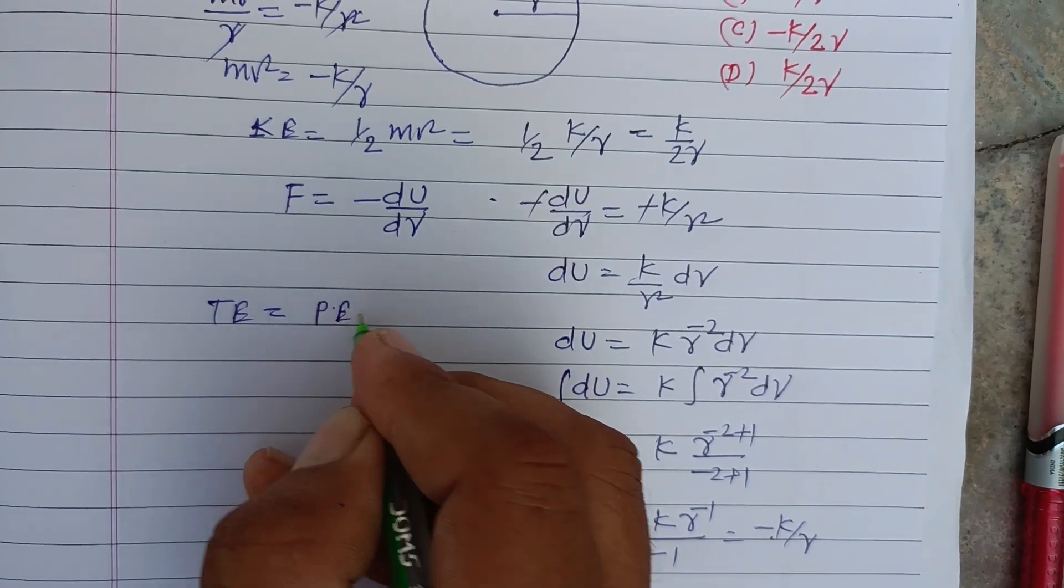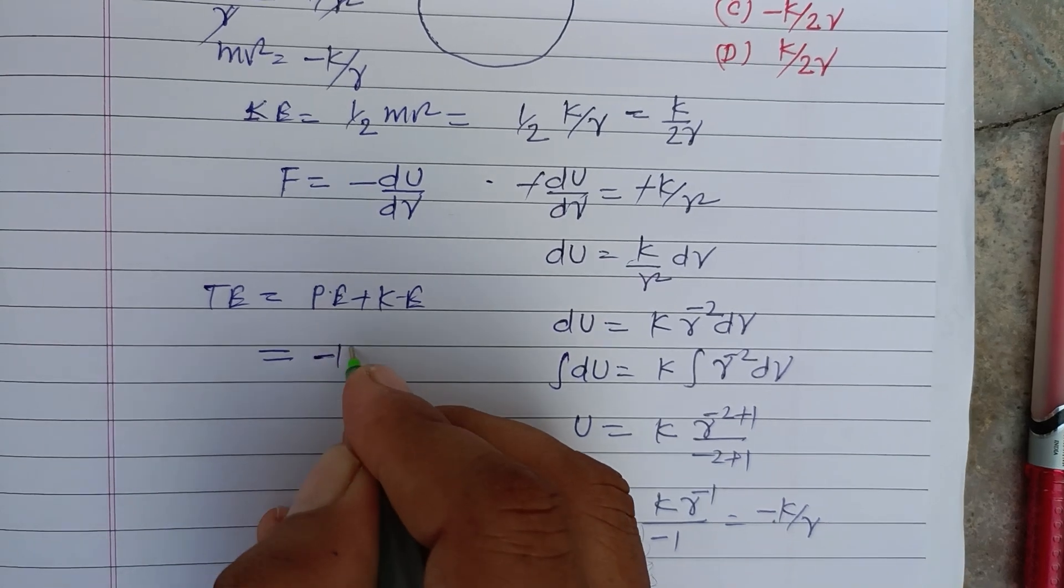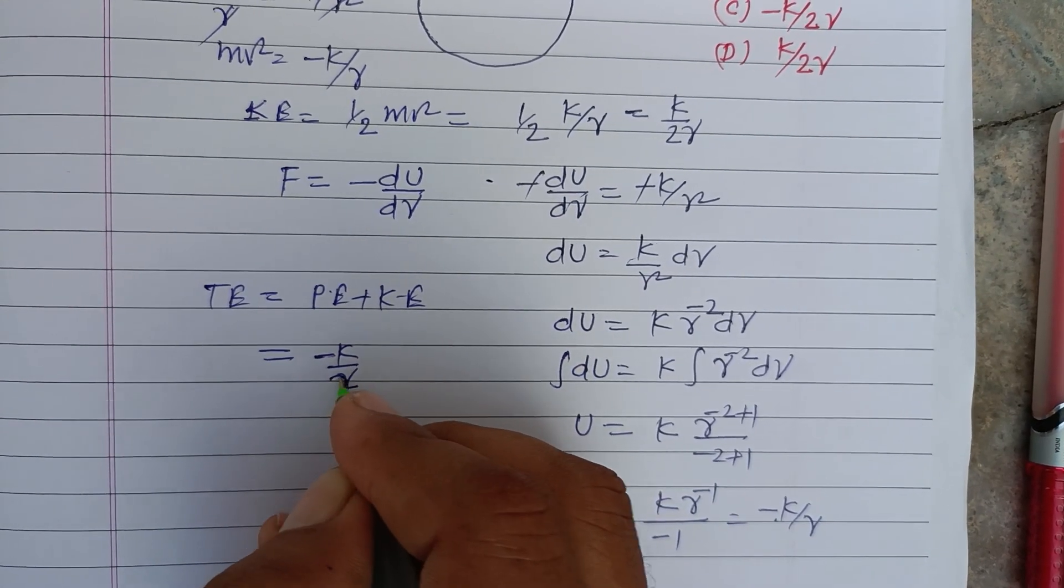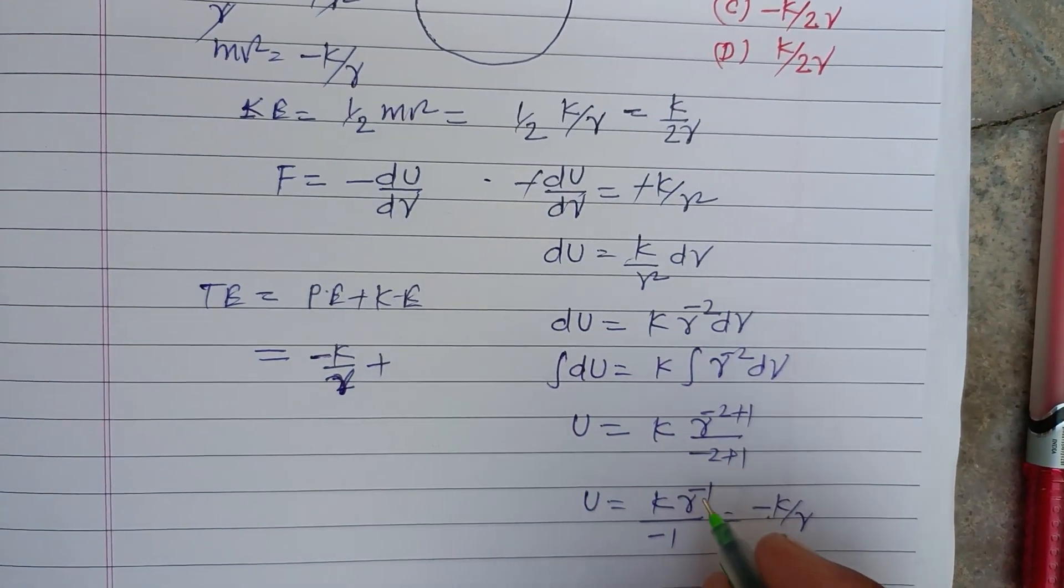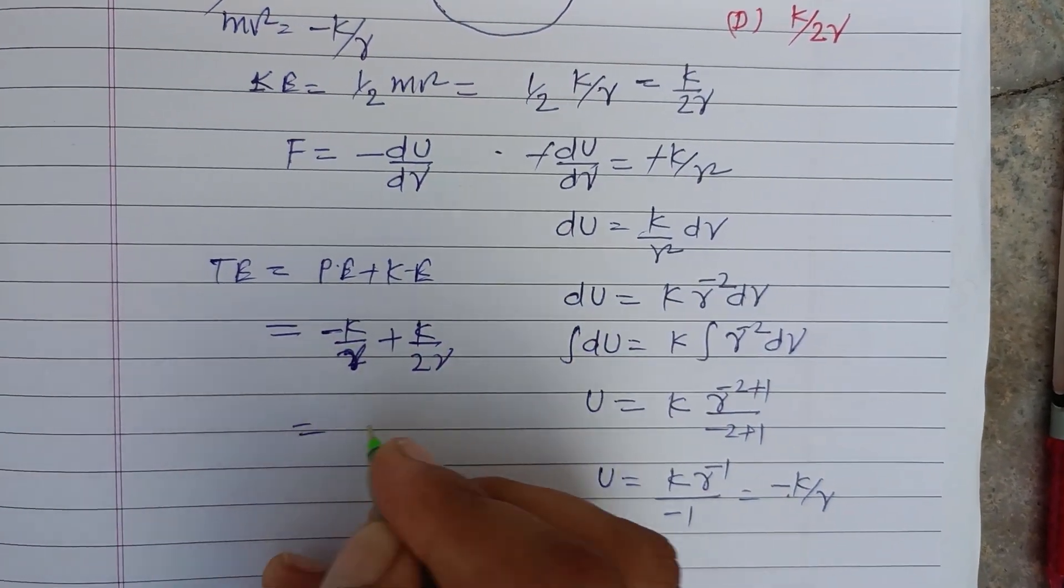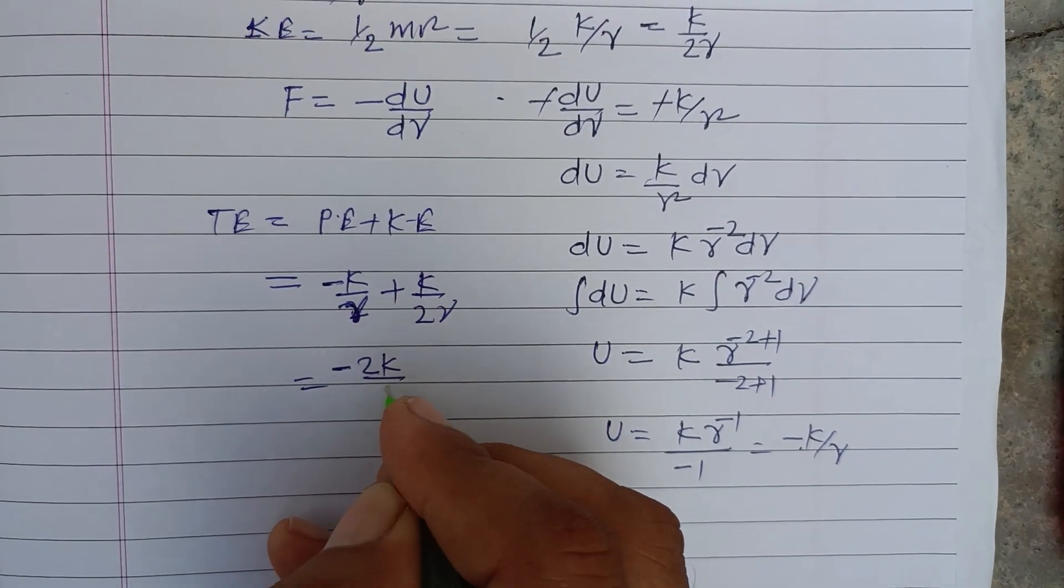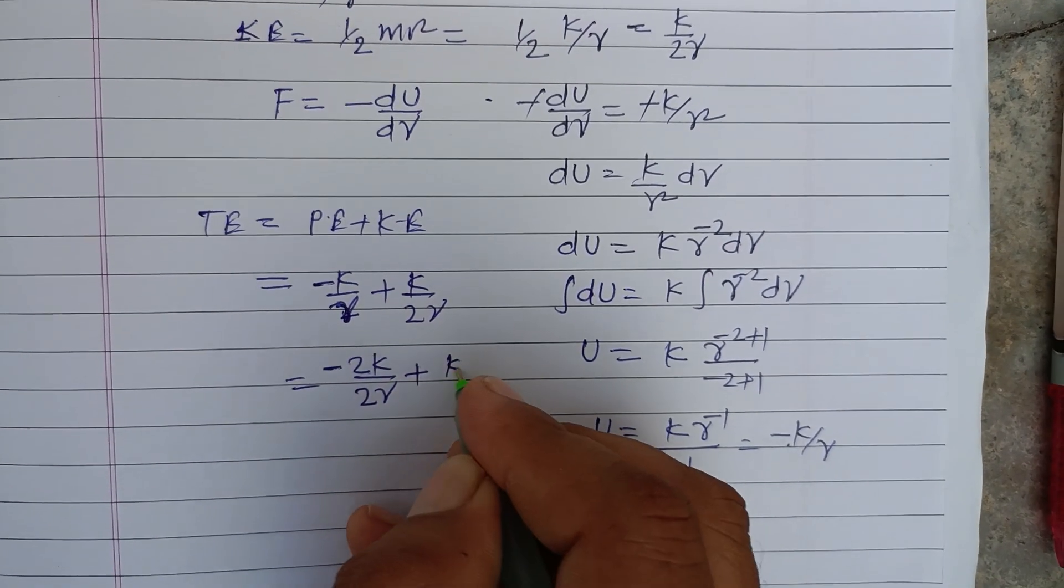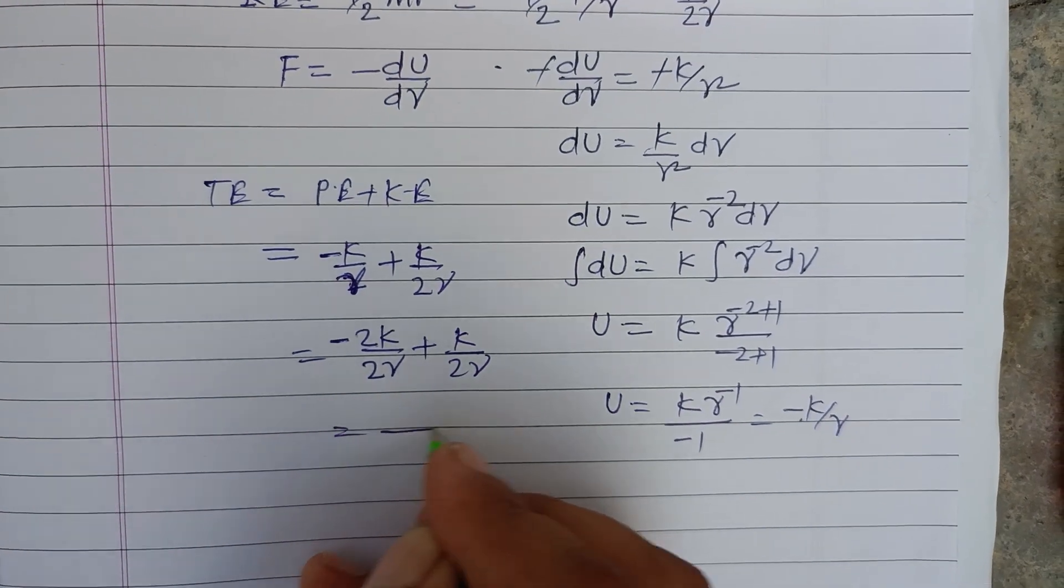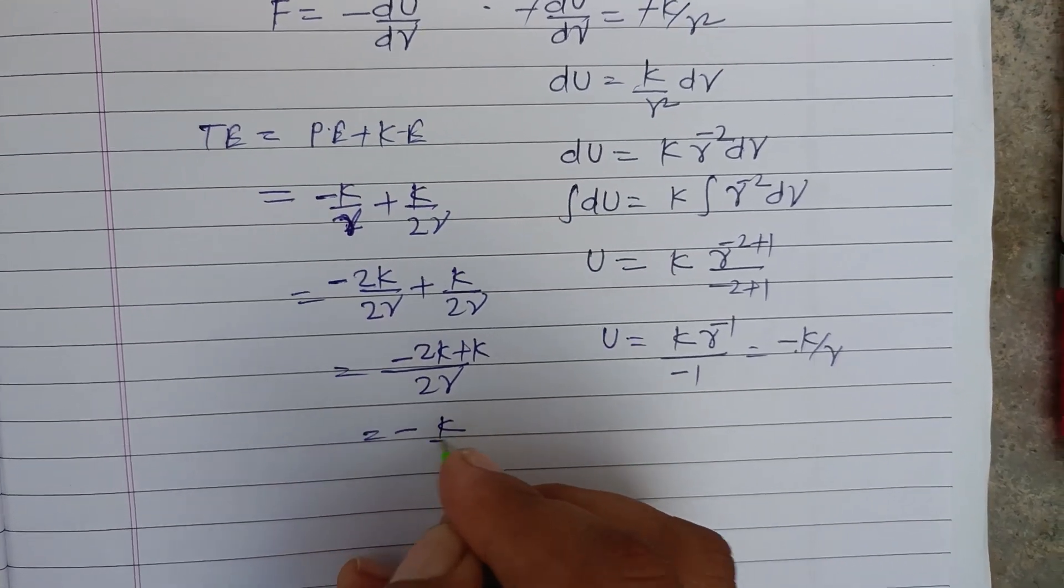So total energy of the particle is potential energy plus kinetic energy. Potential energy is minus K over R, while kinetic energy is K over 2R. We multiply this by 2 to make the denominator same. Now denominator is same, so minus 2K plus K, that is minus K over 2R.